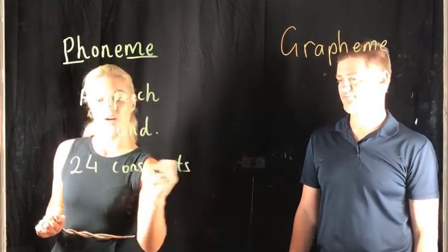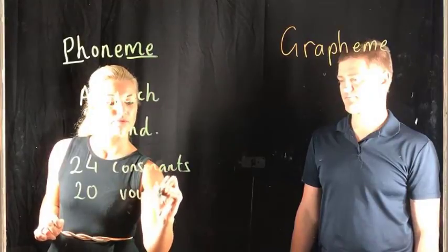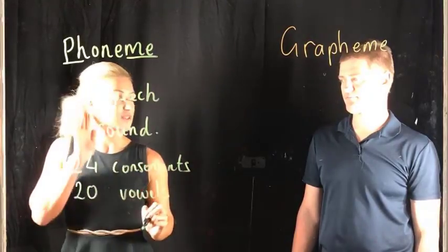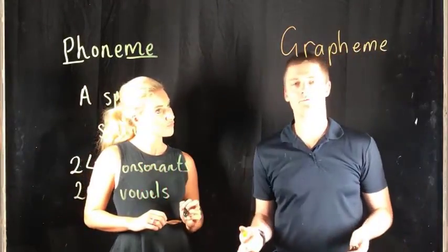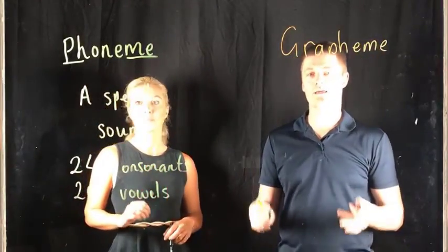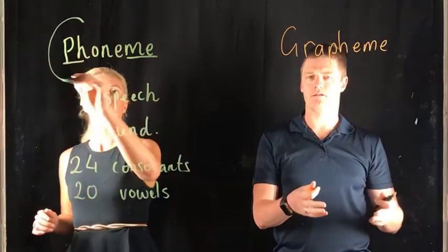So there are actually 44 phonemes in the English language — there are 24 consonants and 20 vowels. They are the sounds that we hear when we speak. So we've got phonemes as the sounds that we hear. What's a grapheme then?